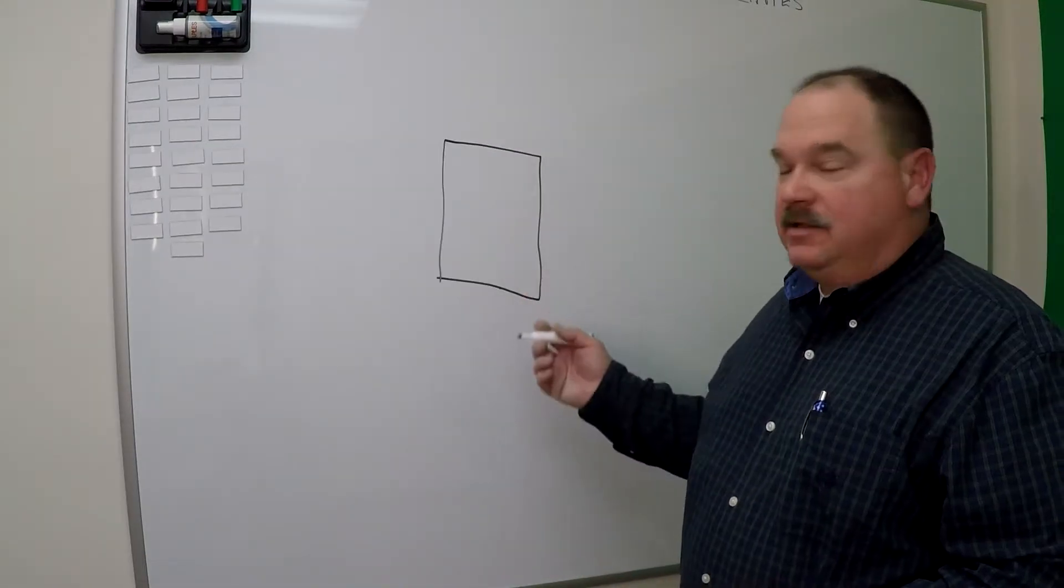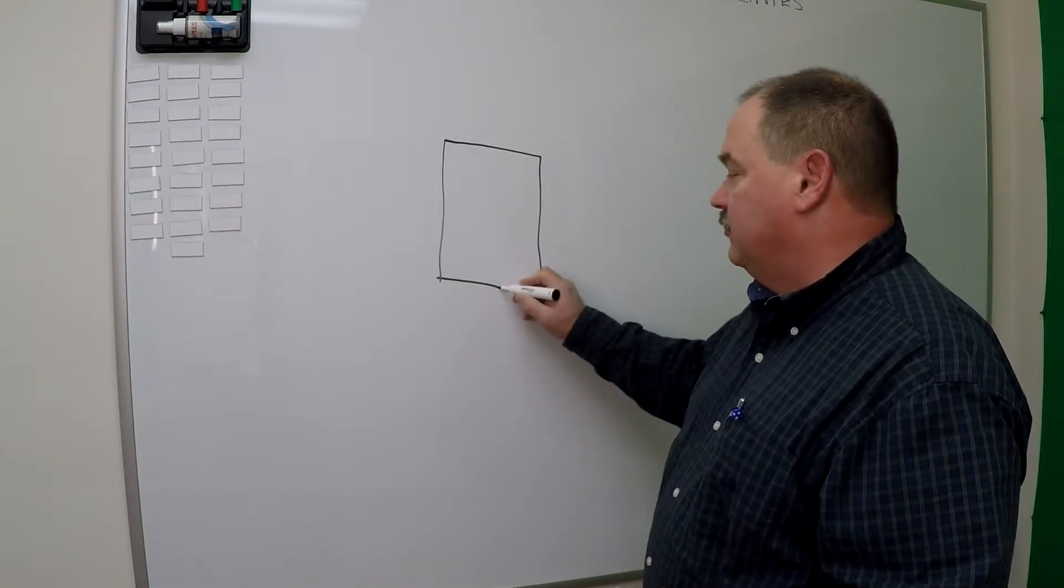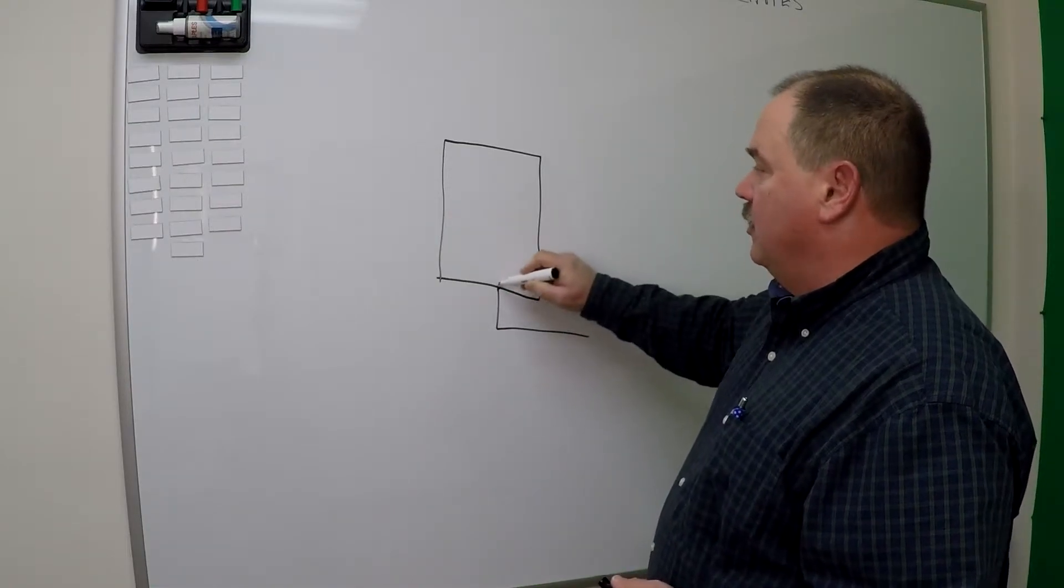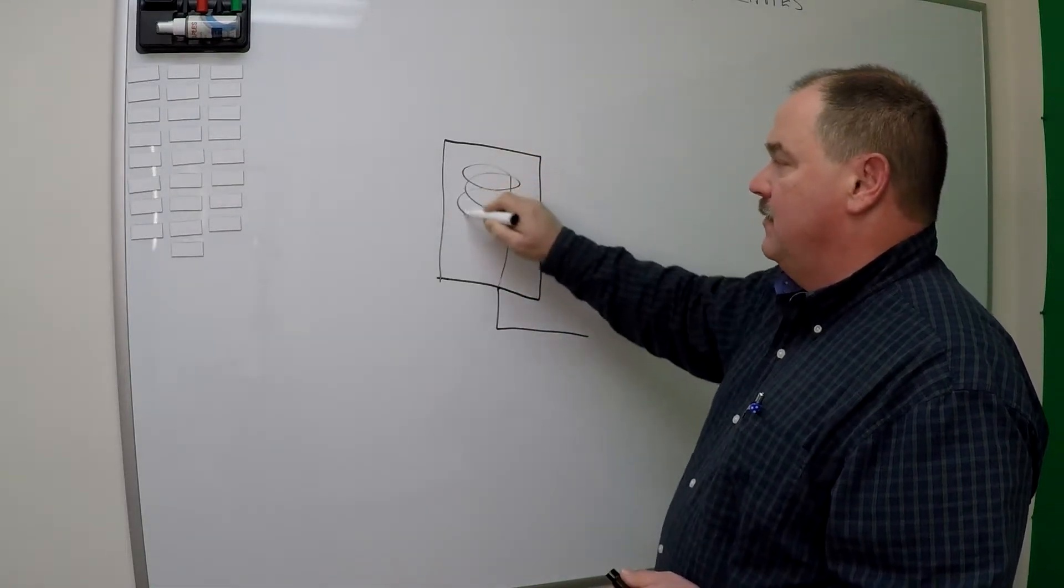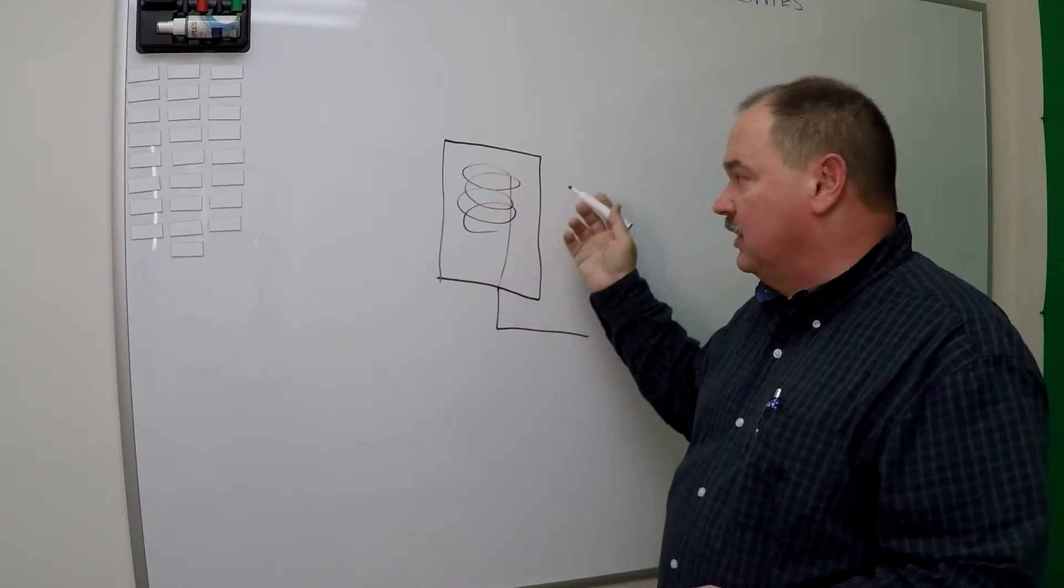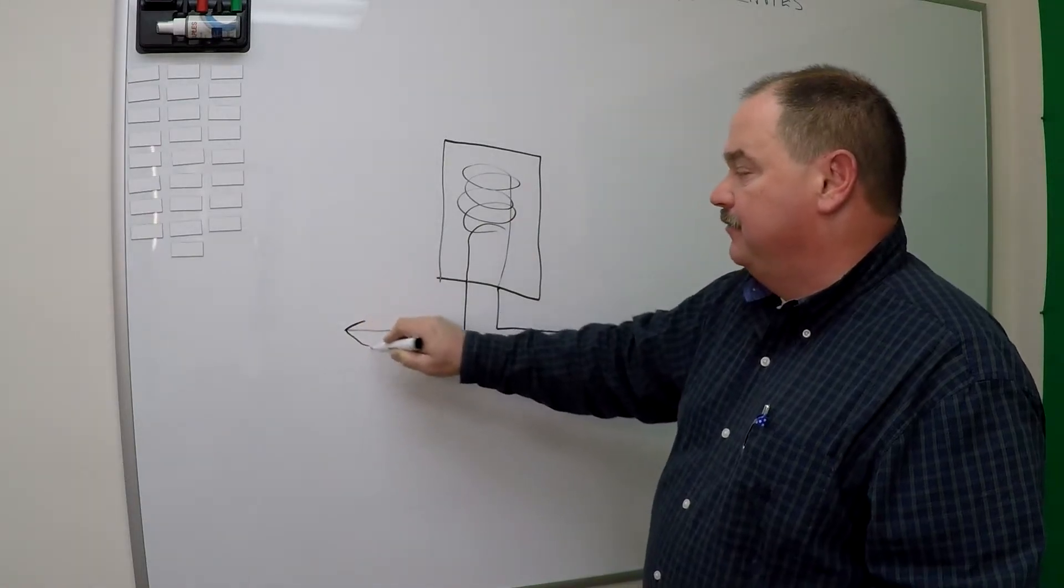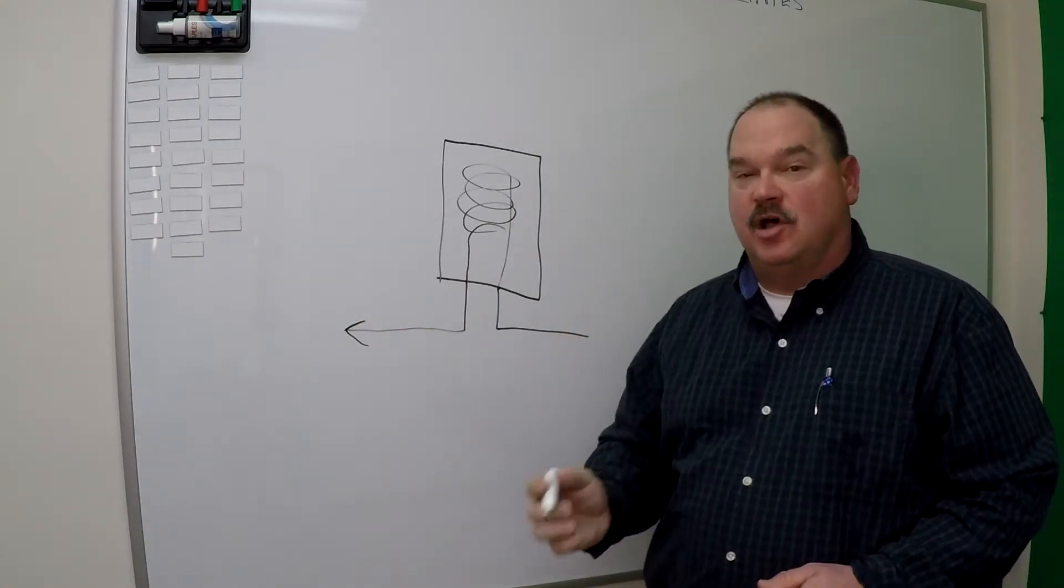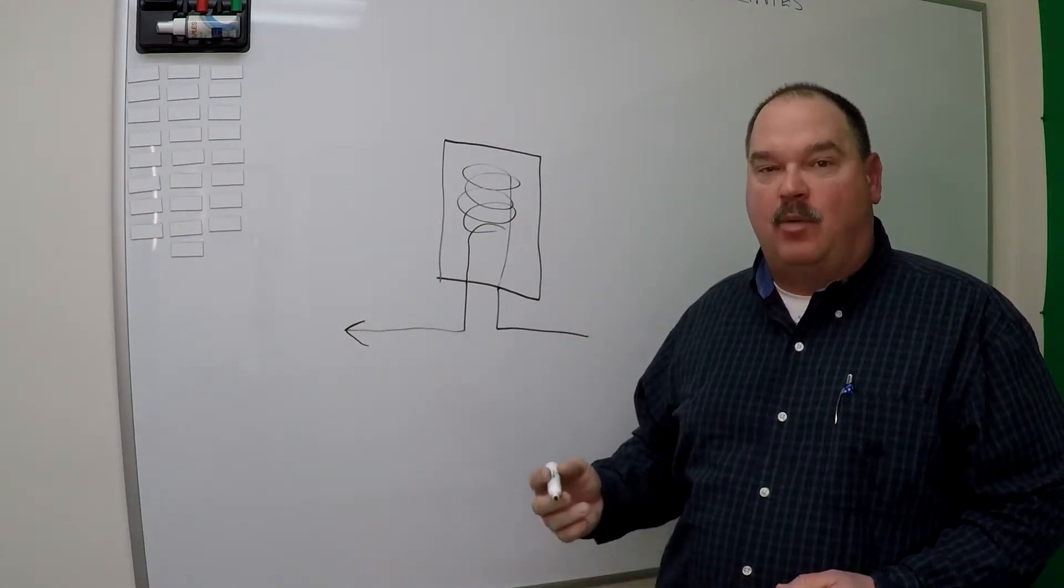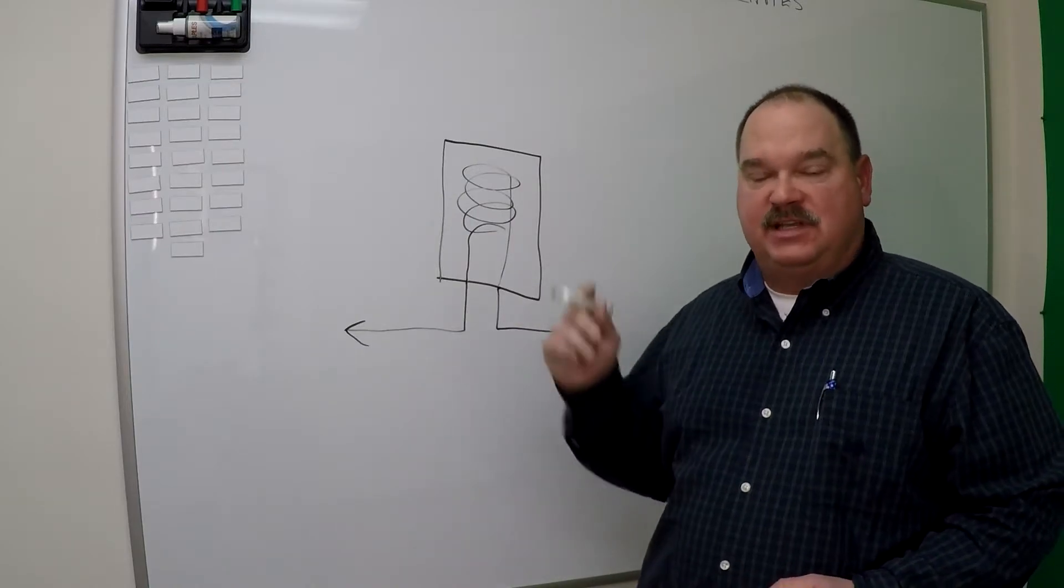In a tankless water heater, and this could be gas or electric, cold water comes in one side, runs through a heat exchanger, and this could be, again, gas or electric, and then out to the house on the hot water side through the pipe. The tankless water heater is always off. It only makes hot water when there's a flow established in the water heater.